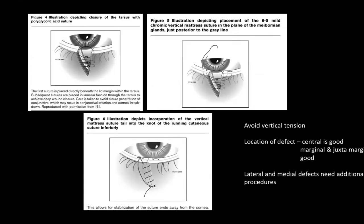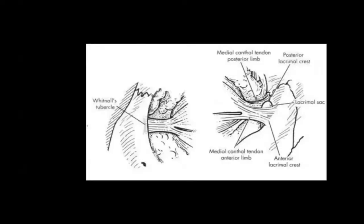Primary closure of a defect is only possible for about 25 to 30% of lid loss. You cannot be overzealous and close the wound under tension — anything up to 30% of lid loss can be closed primarily. It's important to understand the role of the canthal ligaments. The medial canthal ligament has two slips: one attaches to the posterior crest, the other to the anterior crest, encircling the lacrimal sac.